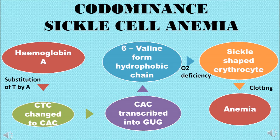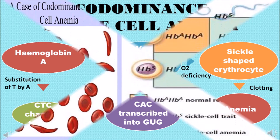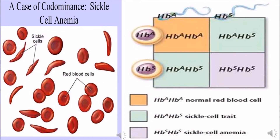This also distorts the configuration of the globin molecules, due to which oxygen molecules do not bind properly. In oxygen deficiency, erythrocytes become sickle-shaped. These sickle-shaped erythrocytes cannot pass through narrow blood capillaries and they form clots, resulting in anemia. In this picture you can see sickle-shaped erythrocytes alongside normal round erythrocytes.